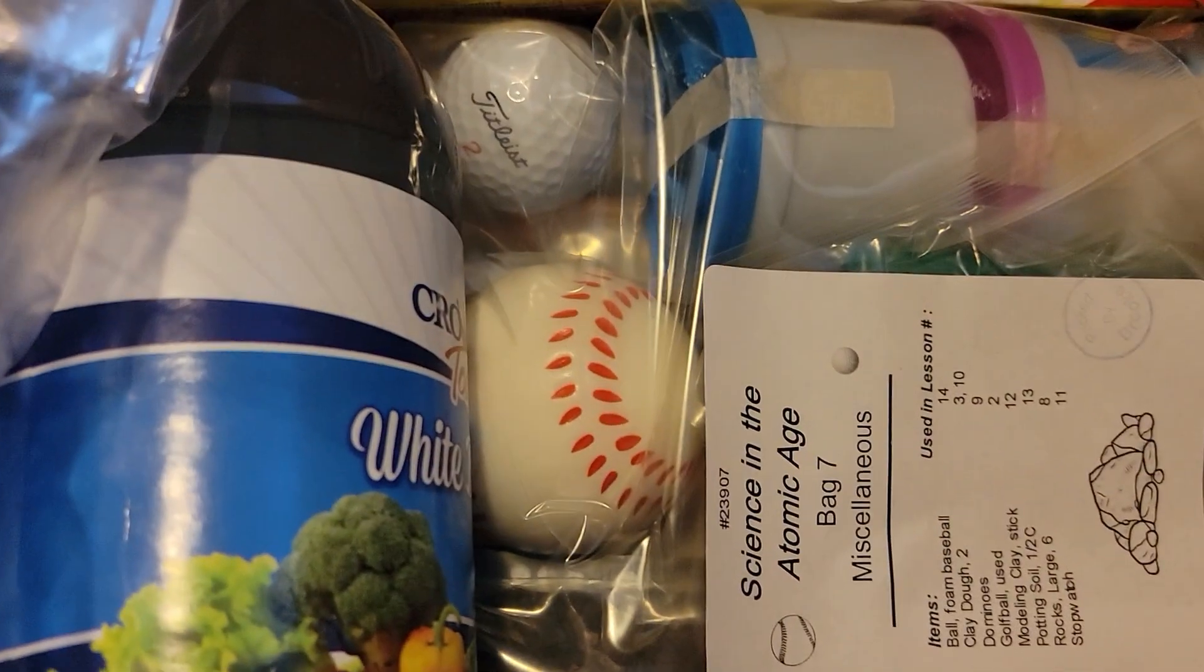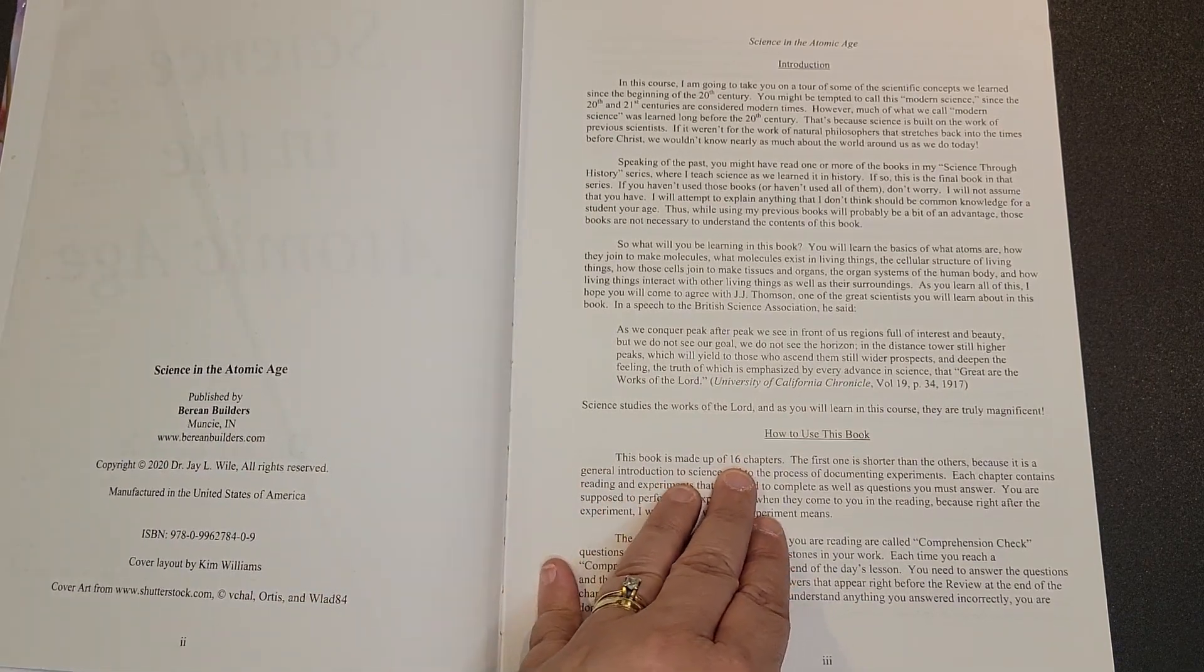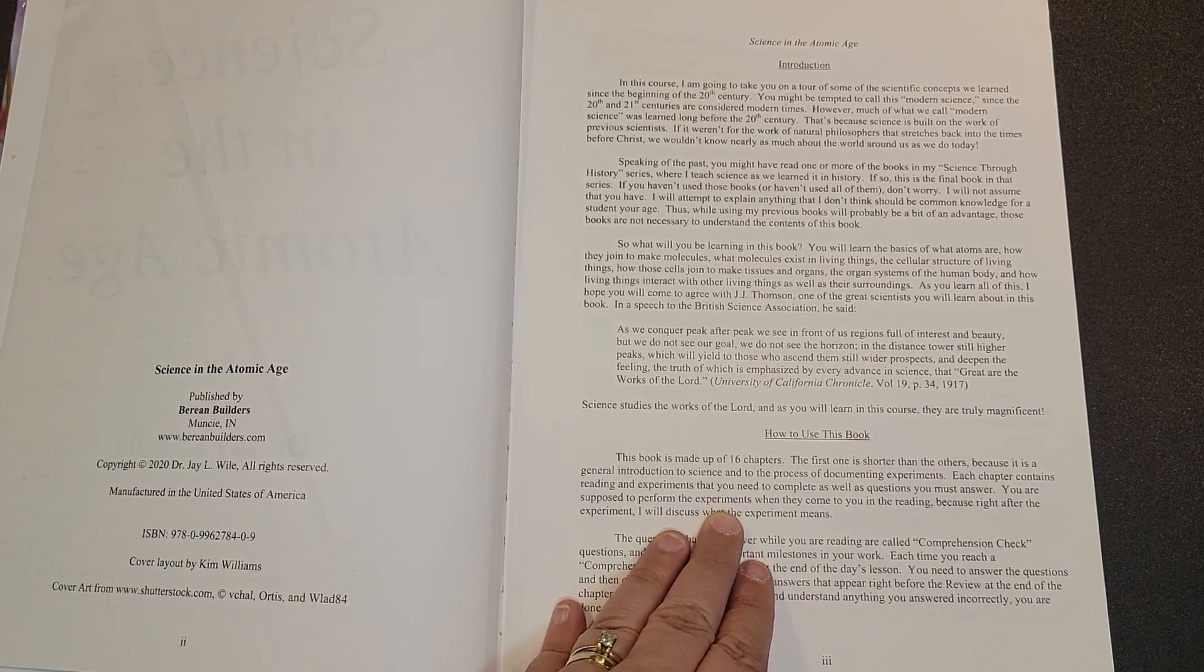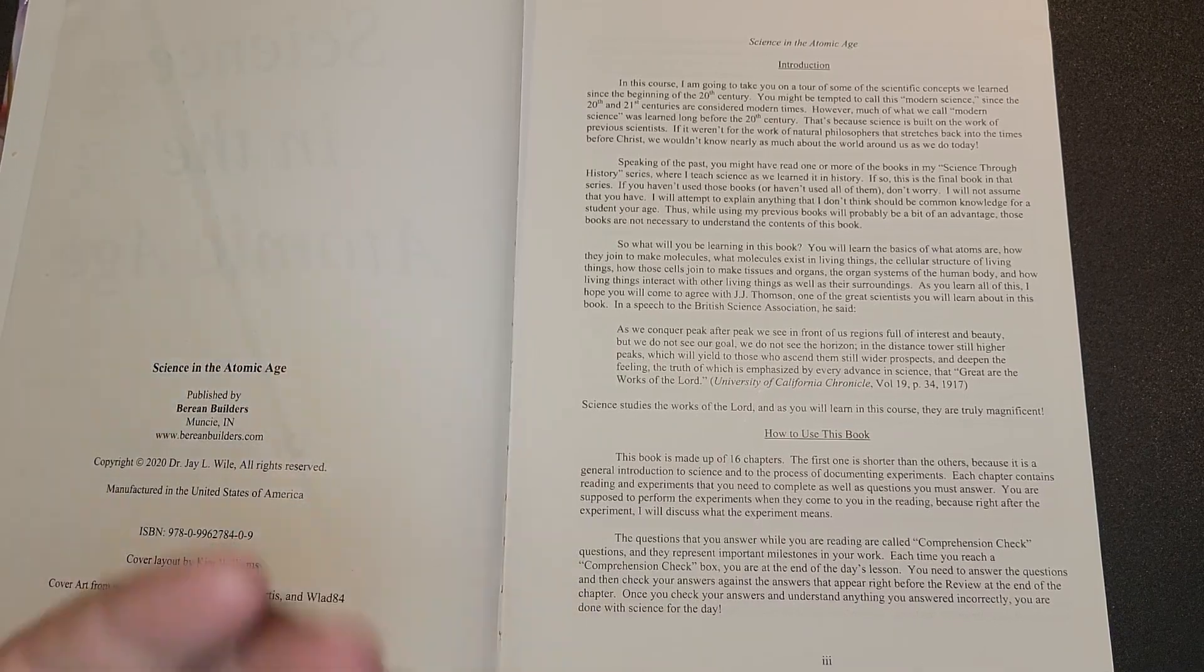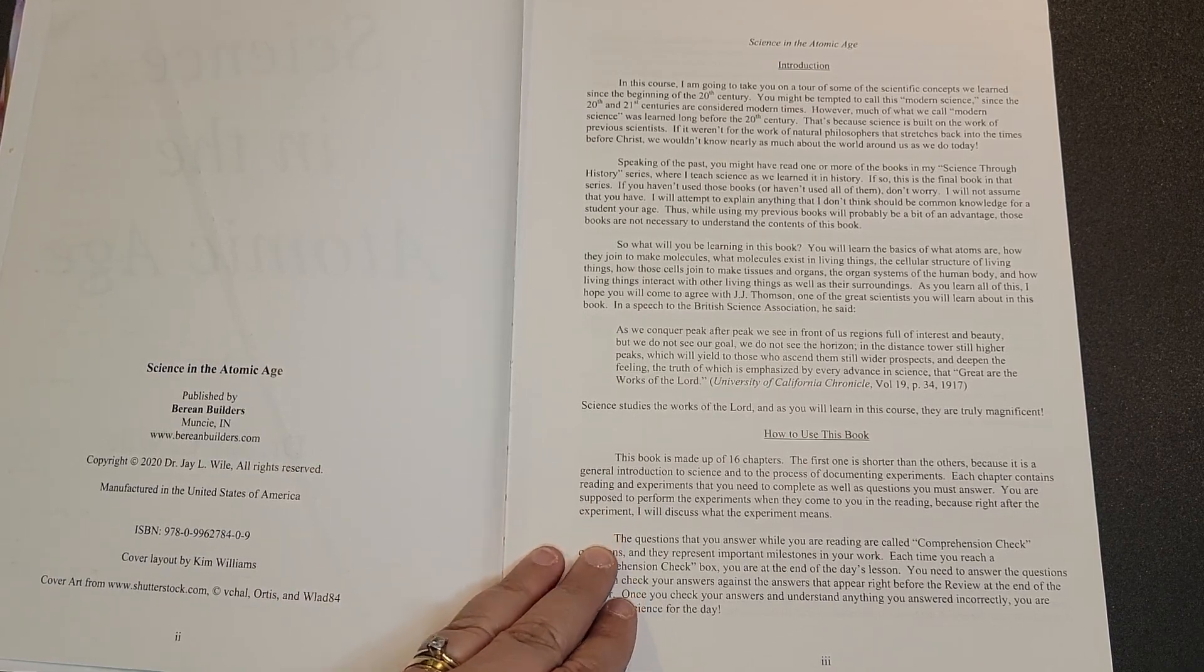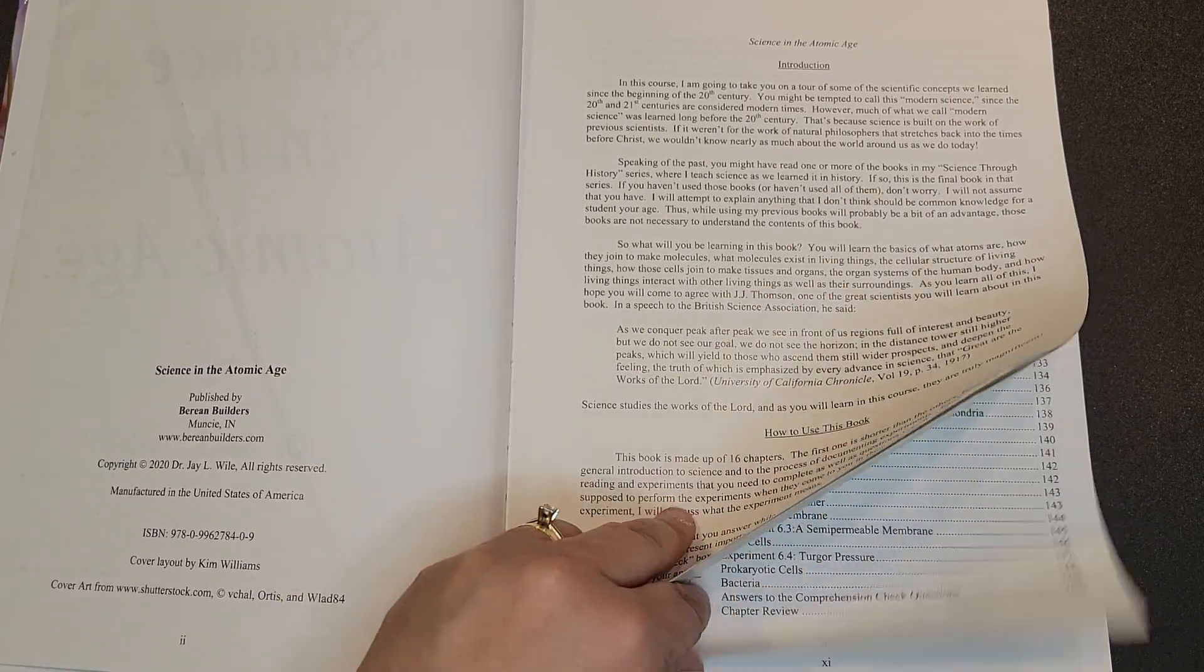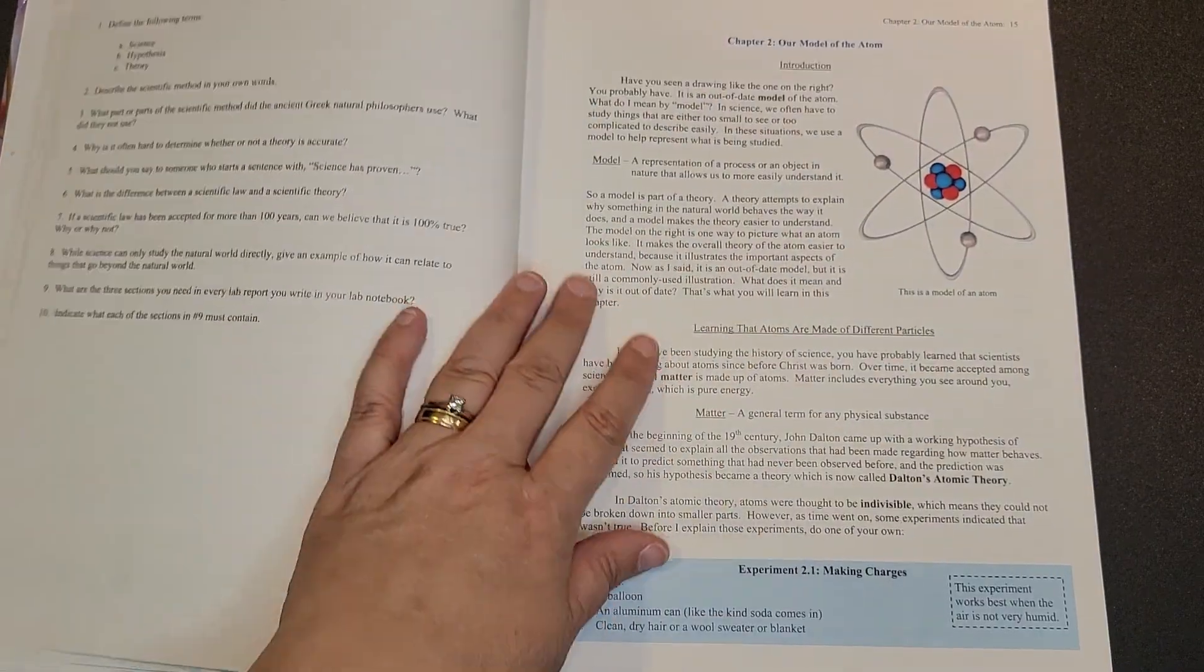So let's look at how they recommend you using this book. There are 16 chapters. Each chapter contains the reading and experiments, and you're supposed to perform the experiments when they come to you in the reading, not wait until the end of the week or something. They want you to do it whenever it comes up in the reading. You also have questions that are called comprehension checks. These comprehension questions need to be completed before you finish for the day.